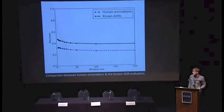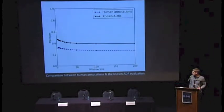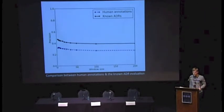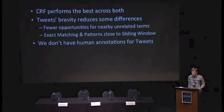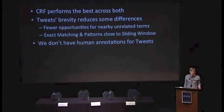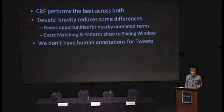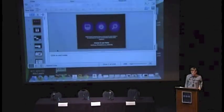Here you have the trends for the sliding window, which I chose because it has that easy group-of-words parameter size. At very small window sizes the results are different, but after that there's basically a constant performance increase and it behaves the same using both the known ADR and the other evaluation. In conclusion, the takeaway is the CRF performs well across everything. Tweets are short, which changes the differences — things perform better on tweets. But of course we don't have human annotations for tweets, so we don't know exactly how well everything is doing on that data set. Thank you.